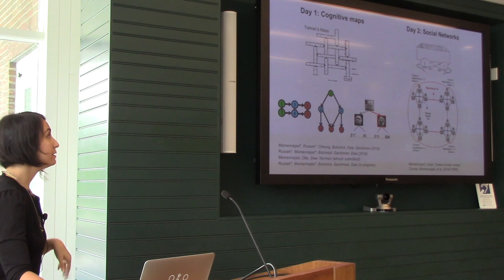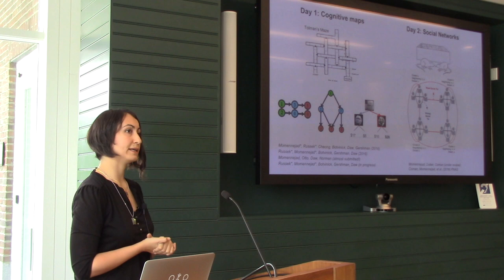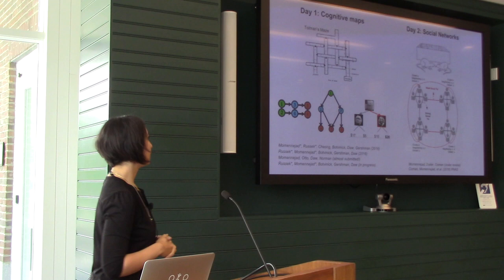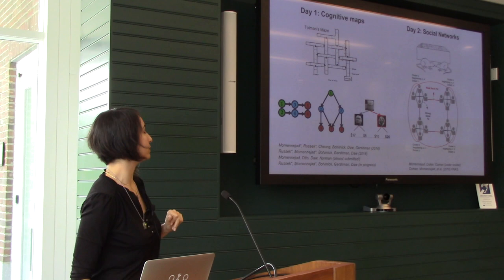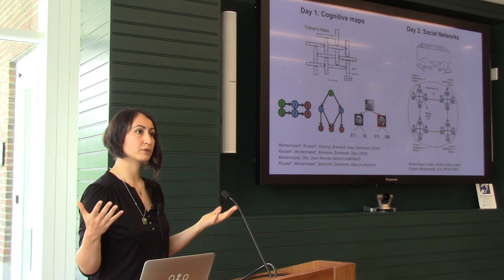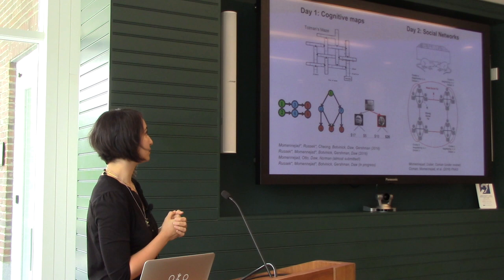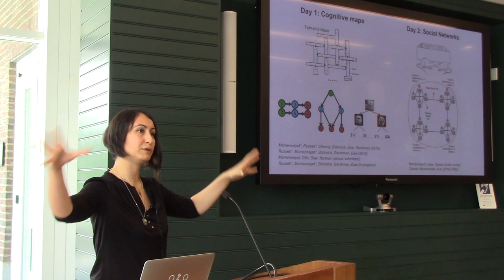Day one is going to be about cognitive maps, going back to one of my academic heroes, Tolman — who, as you will see later, I kind of disagree with on some aspects of his work. I will talk about three main studies where I use different kinds of MDPs or Markov decision processes, which have a graph structure, to design experiments and test different kinds of representations in the brain. Tomorrow I'll talk about different network structures in studies I did with networks of people and how the temporal dynamics of networks shapes their collective memory.